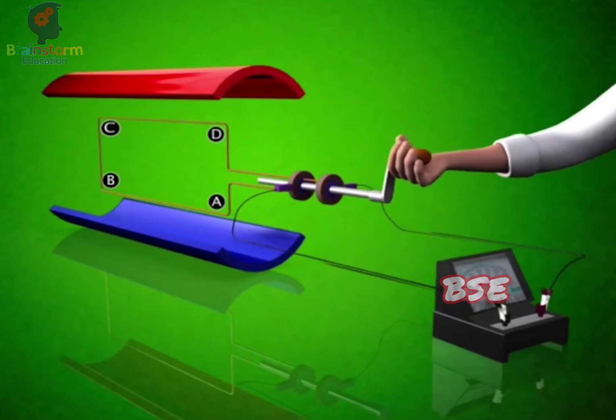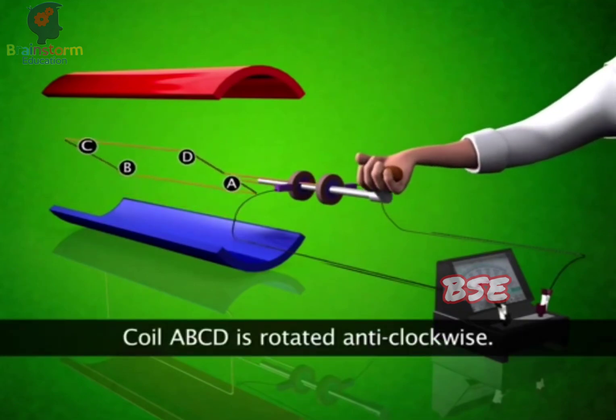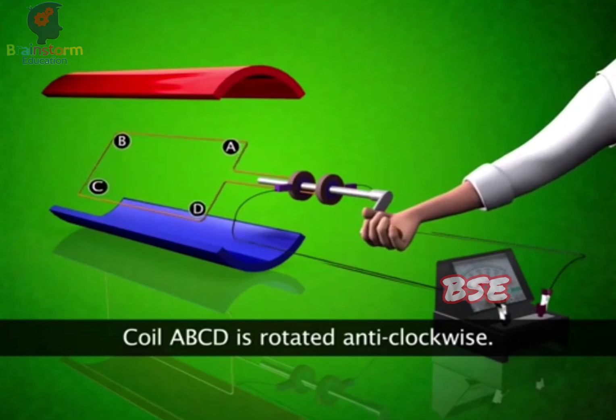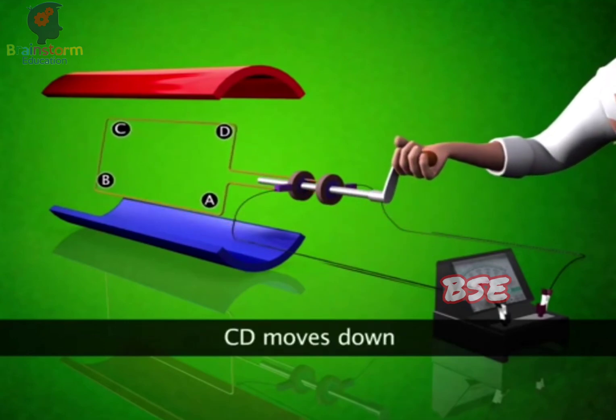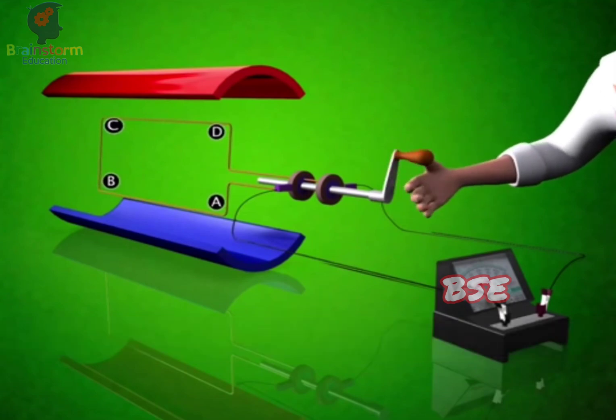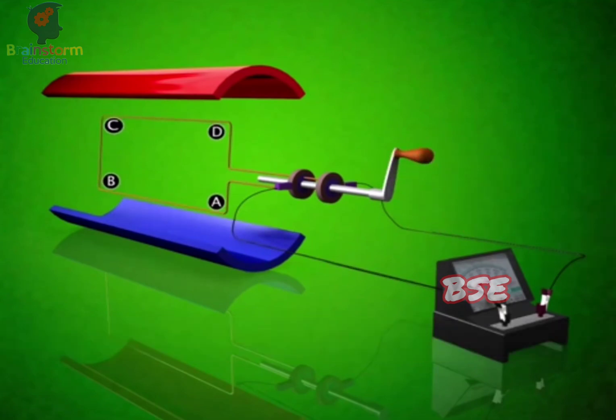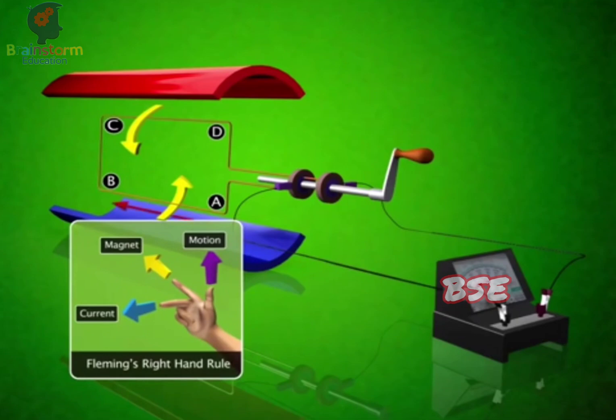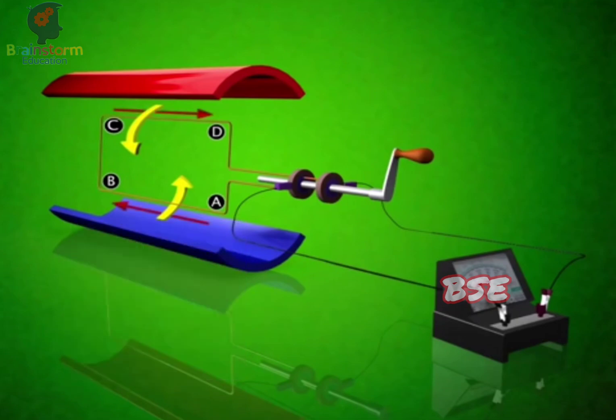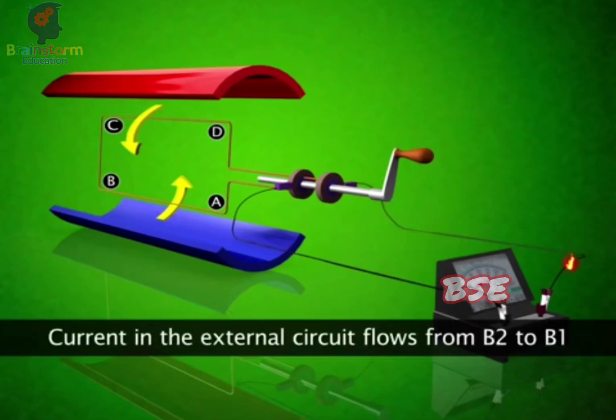The axle attached to the two rings is rotated anti-clockwise. Arm AB moves up and the arm CD moves down in the magnetic field. To find the direction of the induced current, you can use Fleming's right-hand rule. The direction of the induced current is now ABCD. This means that the current in the external circuit flows from B2 to B1.